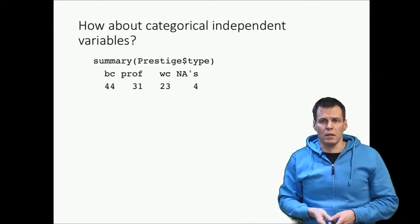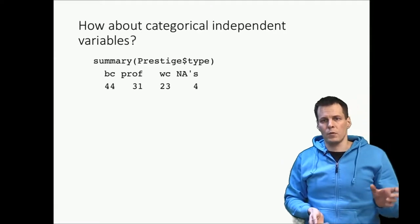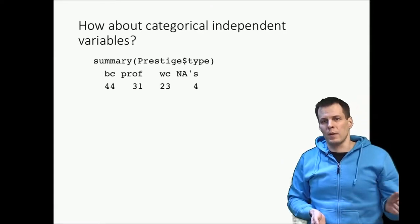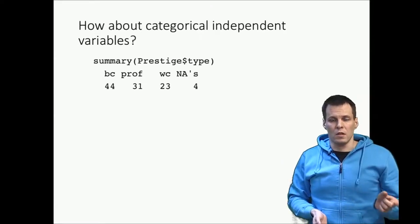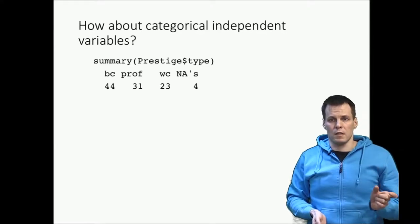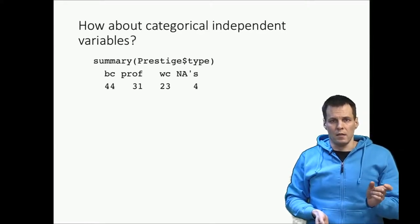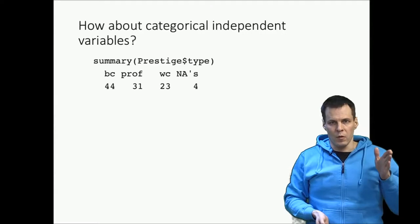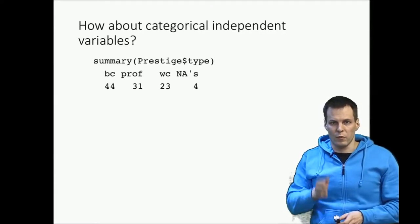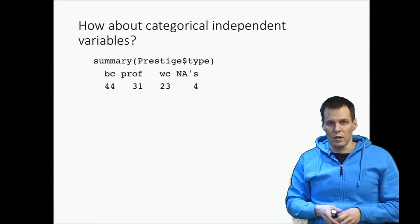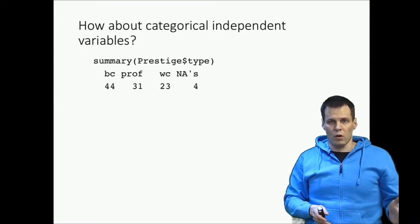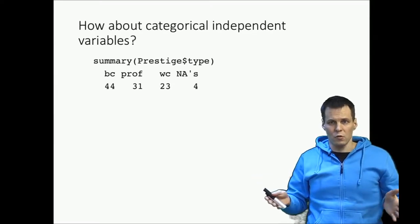So how do we deal with that in a regression analysis? We can't put that as an independent variable because a unit difference doesn't make a difference. We can't say that the difference between blue collar to professional is one unit, between professional and white collar is one unit, and between blue collar and white collar is two units.